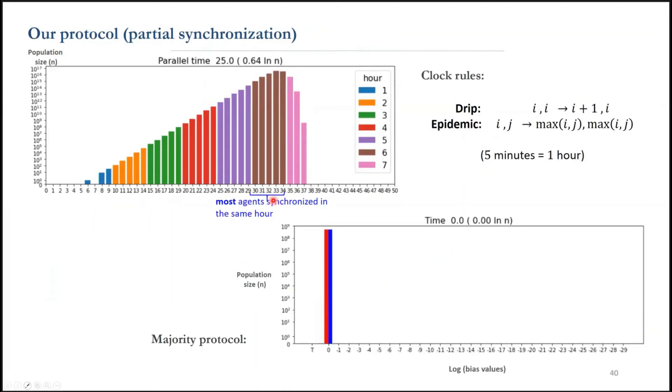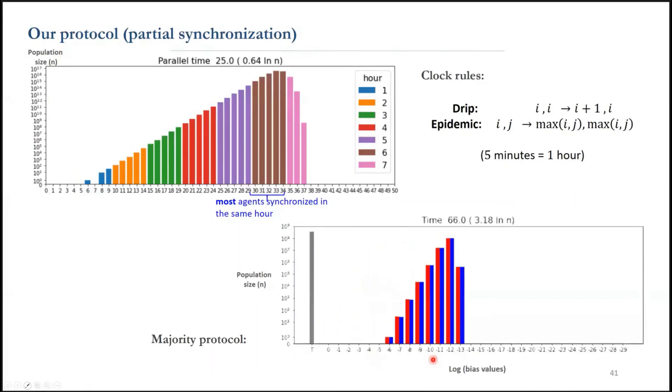We can also look at a simulation of our majority protocol with this partial synchronization and see how the agent's biases change over time. We kept the exact cancel and split rules, but the hours move much faster now.